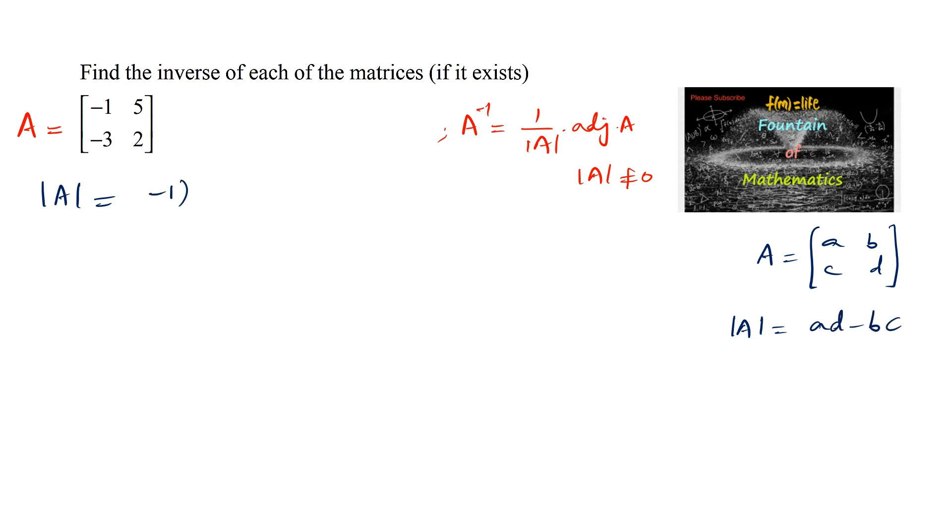So we can write minus 1 into 2 minus 5 into minus 3, which is negative 2, and here positive 15. 15 minus 2 is 13, which is not equal to 0. Hence we can say that A inverse exists.